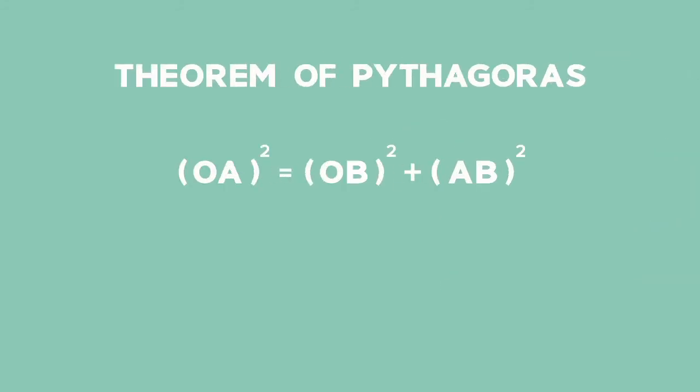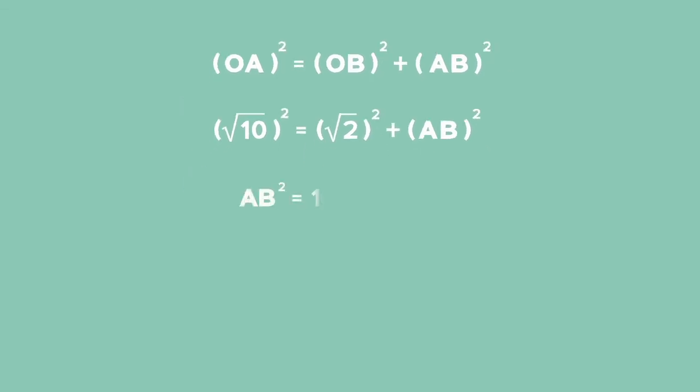Now use the theorem of Pythagoras to calculate AB. Radius is perpendicular to tangent at the point of contact. You get AB² = 10 - 2, which is 8. So AB will be the square root of 8 in simplified surd form. This is 2√2.